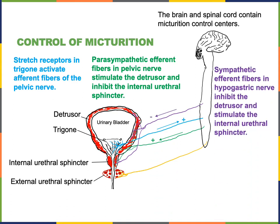In contrast, sympathetic efferent fibers travel through the hypogastric nerve to reach the urinary bladder and release norepinephrine to inhibit contraction of the detrusor and stimulate contraction of the internal urethral sphincter. So while the parasympathetic division stimulates micturition, the sympathetic division inhibits micturition.